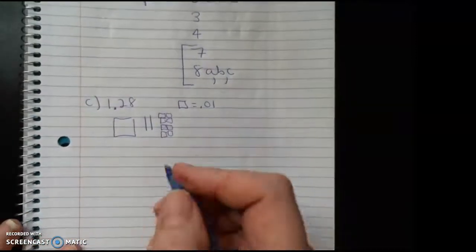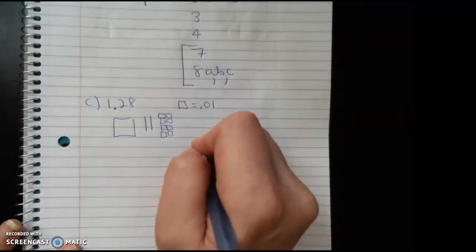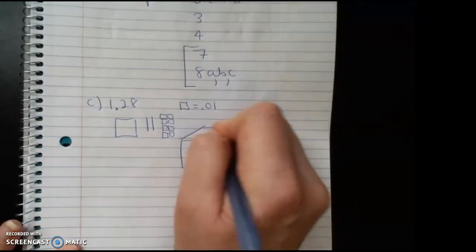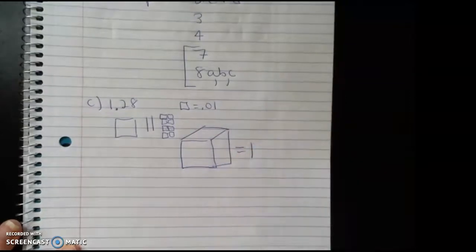And then I could have two longs, which would be my tenths. And then that means a flat would be this guy.